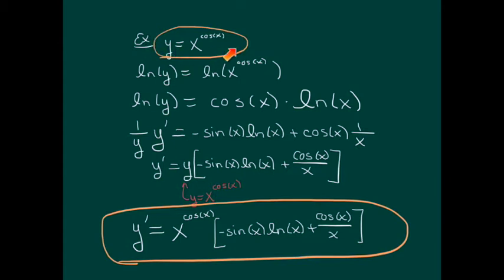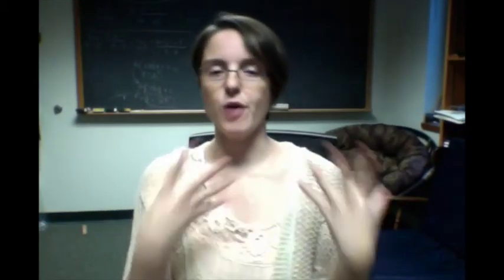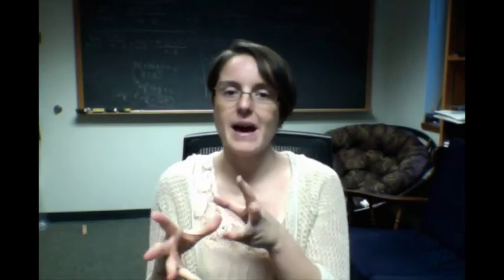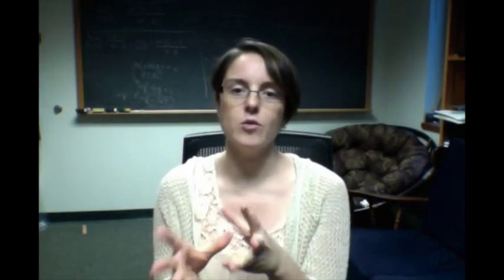Similarly, if this were a position function with time instead of x, then y prime would represent a velocity function. Logarithmic differentiation solves a key problem: how do you take the derivative of a function that's neither a power nor an exponential? What often happens with new mathematical methods is that they solve an obvious problem, but there are often other benefits — and that's what we're going to do next.